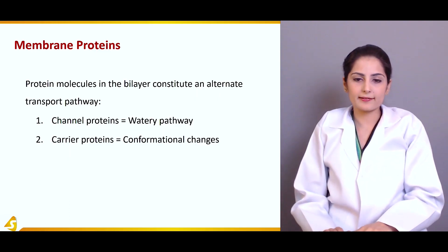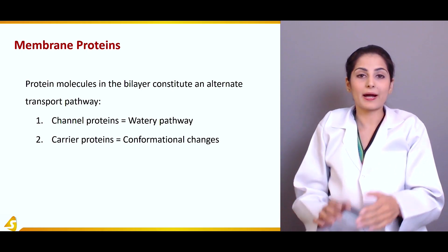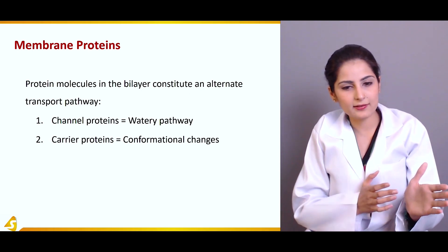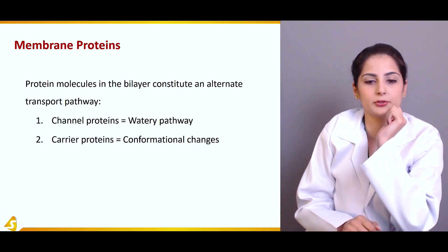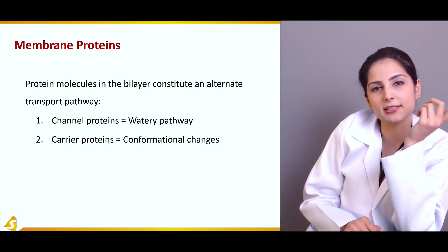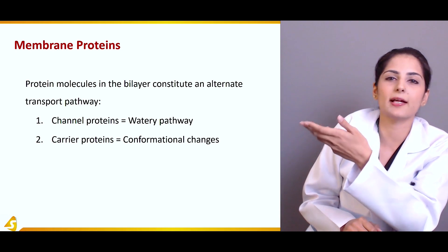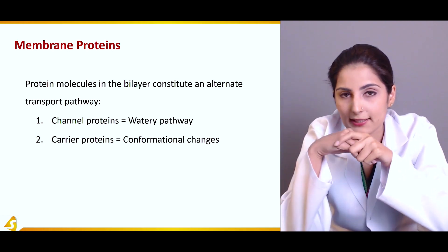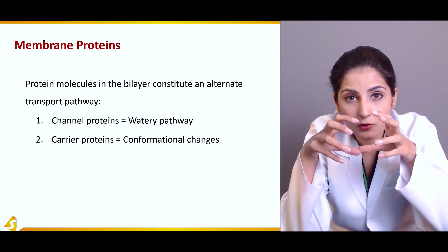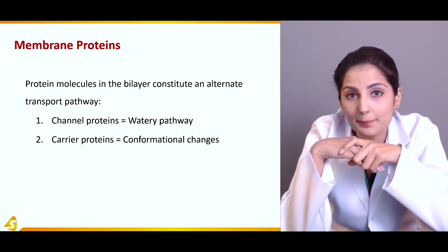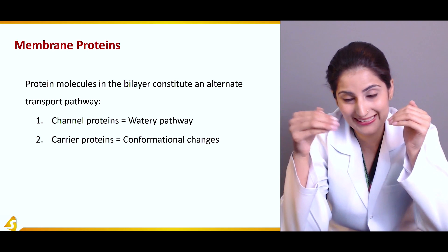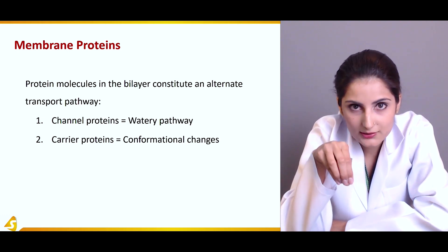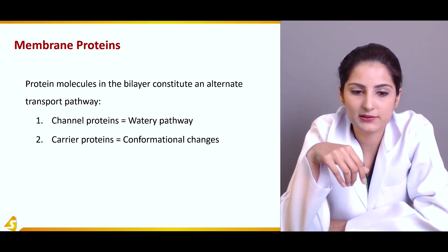The protein molecules in the bilayer constitute an alternate transport pathway. They could either be channel proteins or carrier proteins. Channel proteins are just like tunnels that allow substances to pass through them — relatively easy compared to carrier proteins. Carrier proteins are more complicated — they undergo conformational changes that allow the passage of molecules to the inside or outside of the cell, and these changes enhance or reduce the flow of substances.